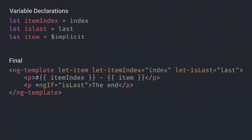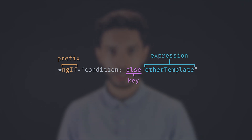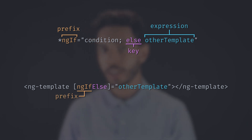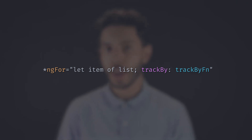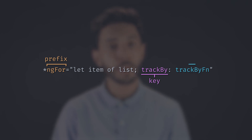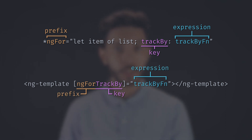After desugaring the variables, that's what we get. Expressions with two arguments and an optional colon between them are key expressions. The expression on the right gets assigned to the key on the left, with a prefix before it. In star ng-if condition else otherTemplate, ng-if is the prefix, else is the key, otherTemplate is the expression. That gets desugared to an ng-template with the ng-if else directive pointing to otherTemplate. In star ng-for letItemOfList trackByTrackFunction, ng-for is the prefix, trackBy is the key, trackByFunction is the expression. That gets desugared to an ng-template with the ng-for trackBy directive pointing to trackByFunction.